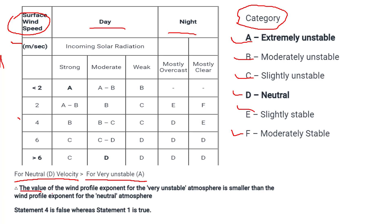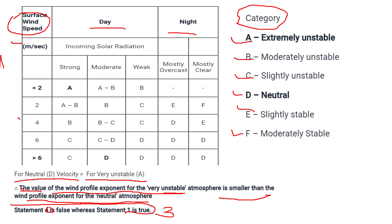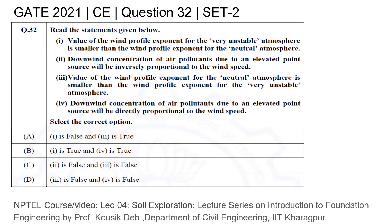Therefore, the value of the wind profile exponent for a very unstable atmosphere is smaller than the wind profile exponent for a neutral atmosphere. According to this, statement 3 is false. So the correct option is option D, where statement 3 is false and statement 4 is also false — these are the two false statements. Thank you so much.